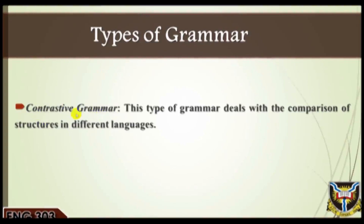Three: contrastive grammar. This type of grammar deals with the comparison of structures in different languages. This is usually done with a view to identifying the areas of similarities, which facilitate learning, and areas of differences, which hinder learning and on which teachers have to do extra work in teaching the foreign language to students.